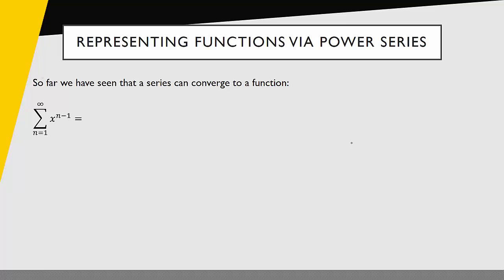So far we've seen that a series can converge to a function. For instance, the sum from n equals 1 to infinity of x to the n minus 1: when n equals 1 we get x to the 0 power, which is 1, and then we get plus x, plus x squared, plus x cubed, and so on. This is a geometric series, so we know it converges to 1 over 1 minus x, when the absolute value of x is less than 1. On this interval, these two things are equal, and we can express them with this equation.